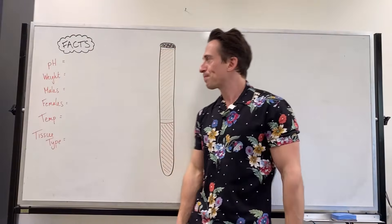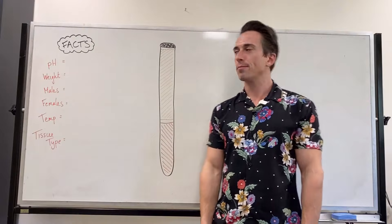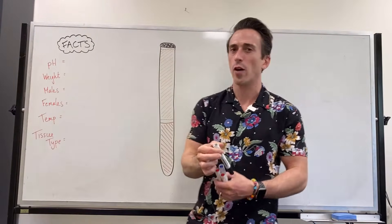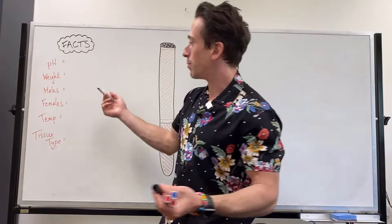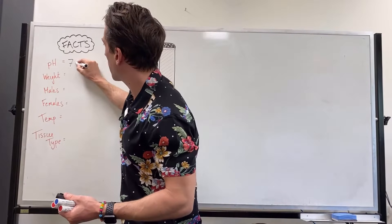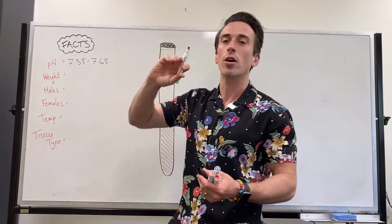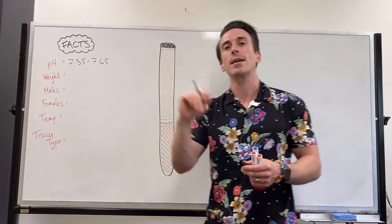First thing is, let's go through some blood facts. So blood, what is the pH of blood? Remember pH is the concentration of hydrogen ions and we measure it as pH and it's between 7.35 and 7.45. Really important, if the pH of our blood goes outside of this range, things can start to go bad.